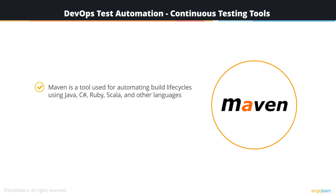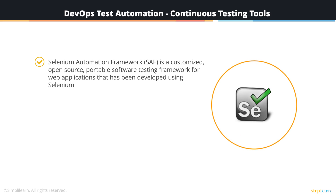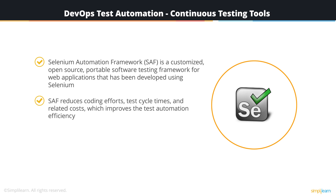Maven is a tool for automating build life cycles using Java, C#, Ruby, Scala, and other languages. Automation ensures that for building a project, only a small set of commands need to be executed. Maven uses an XML file to describe the software project being built along with its dependencies on required plugins, external libraries, and components. The Apache Software Foundation hosts the Maven project. Selenium Automation Framework is a customized, open-source, portable software testing framework for web applications developed using Selenium as a script-less test automation framework. Selenium reduces coding efforts, test cycle times, and related costs, which improves test automation efficiency of apps developed on .NET, AJAX, or Java J2EE.